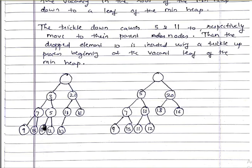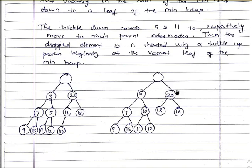We now insert the dropped element 10 into the remaining open position and apply the trickle-up process. Since 10 is smaller than 11, 10 trickles up and 11 comes down. Now the min-heap is balanced: 5 is the smallest at the top, 7 and 10 are greater than 5, 7 is smaller than 9 and 15, and 10 is smaller than 11 and 12. The max-heap remains valid with 20 at the top. That's it for the DEAP concept!